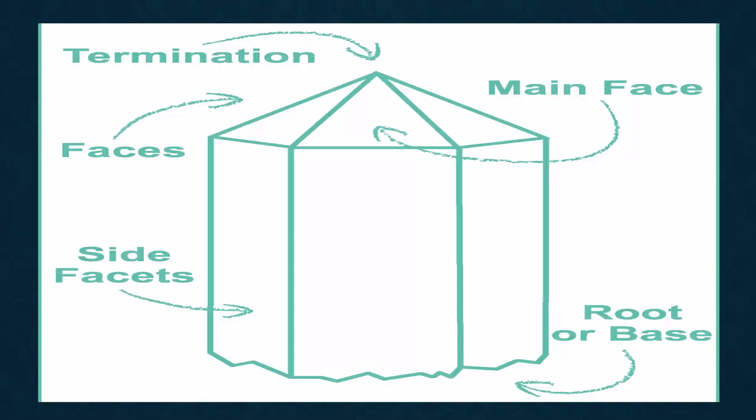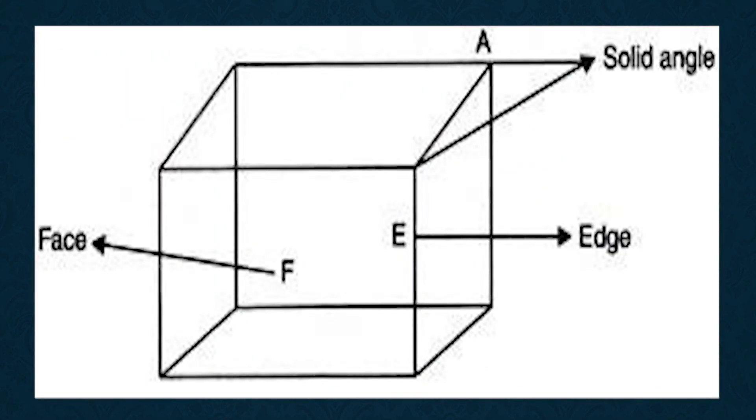The intersection of any two adjacent faces gives rise to an edge. An edge is naturally straight and its position on a crystal is exclusively a matter of the position of the contiguous faces.